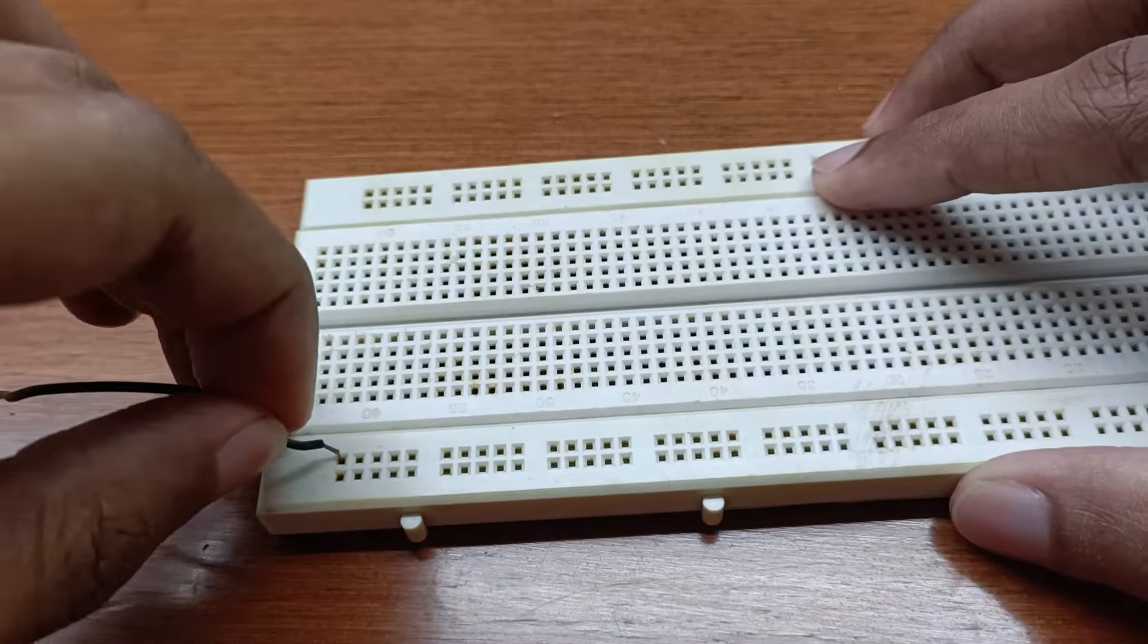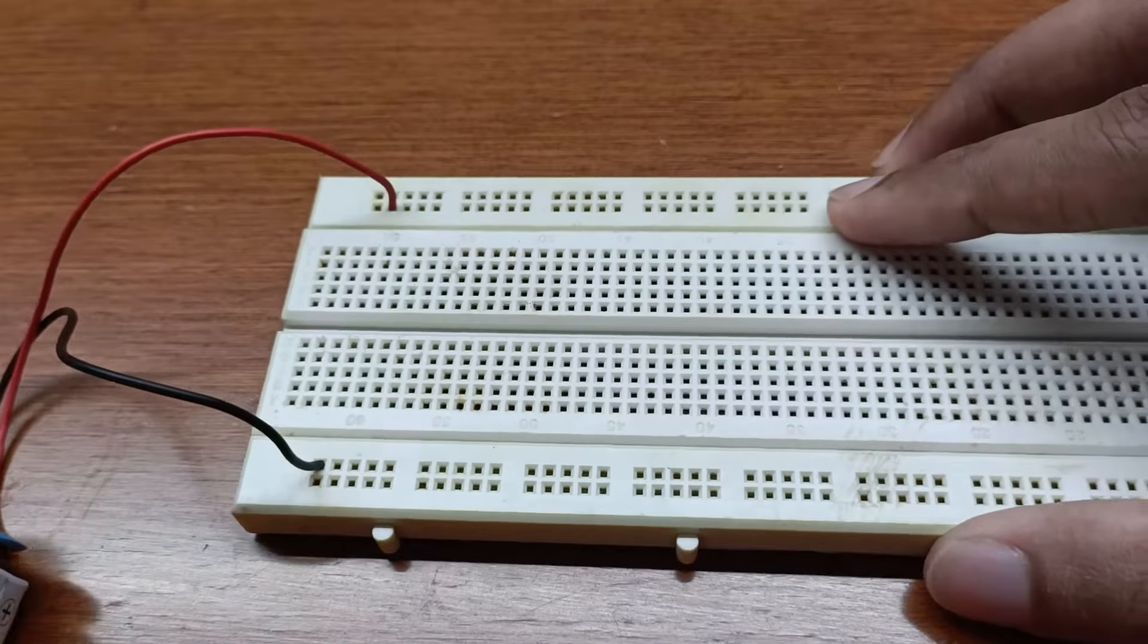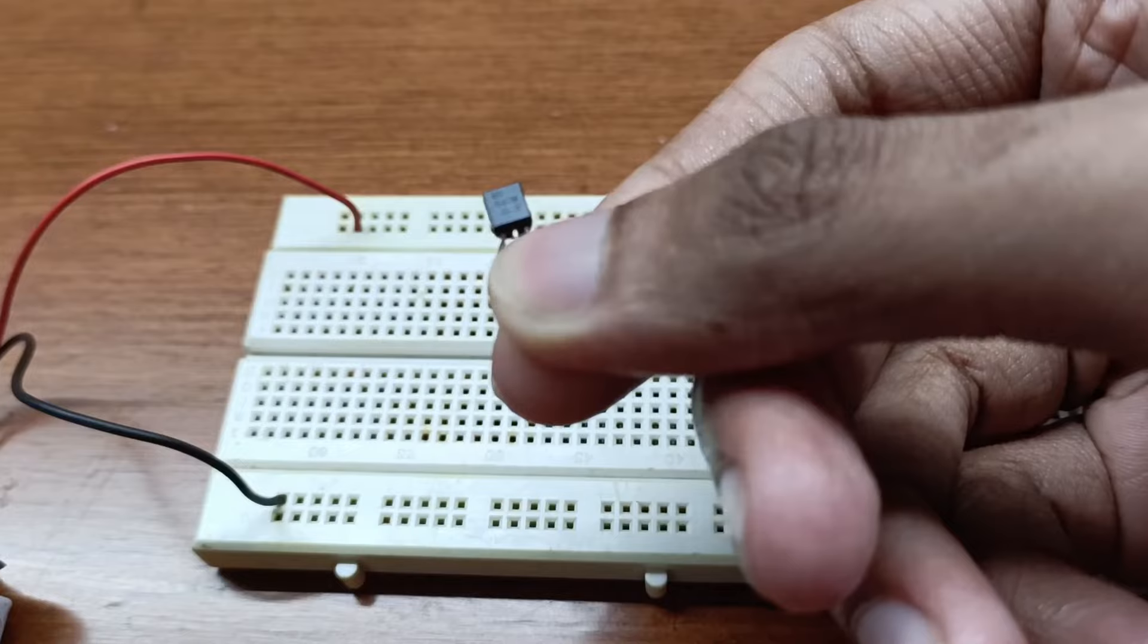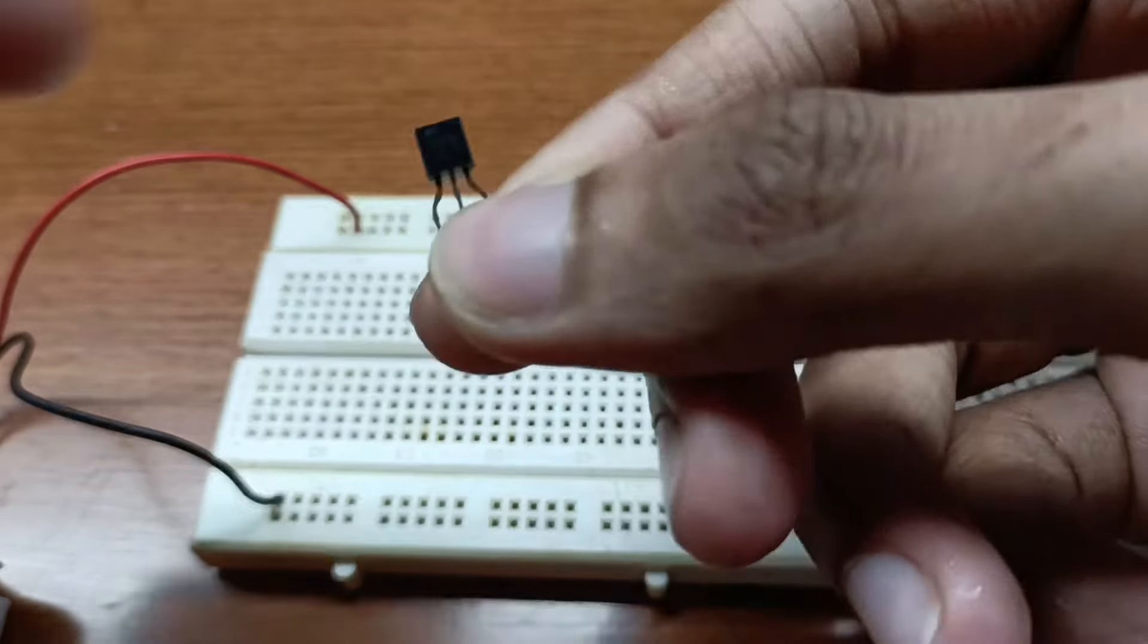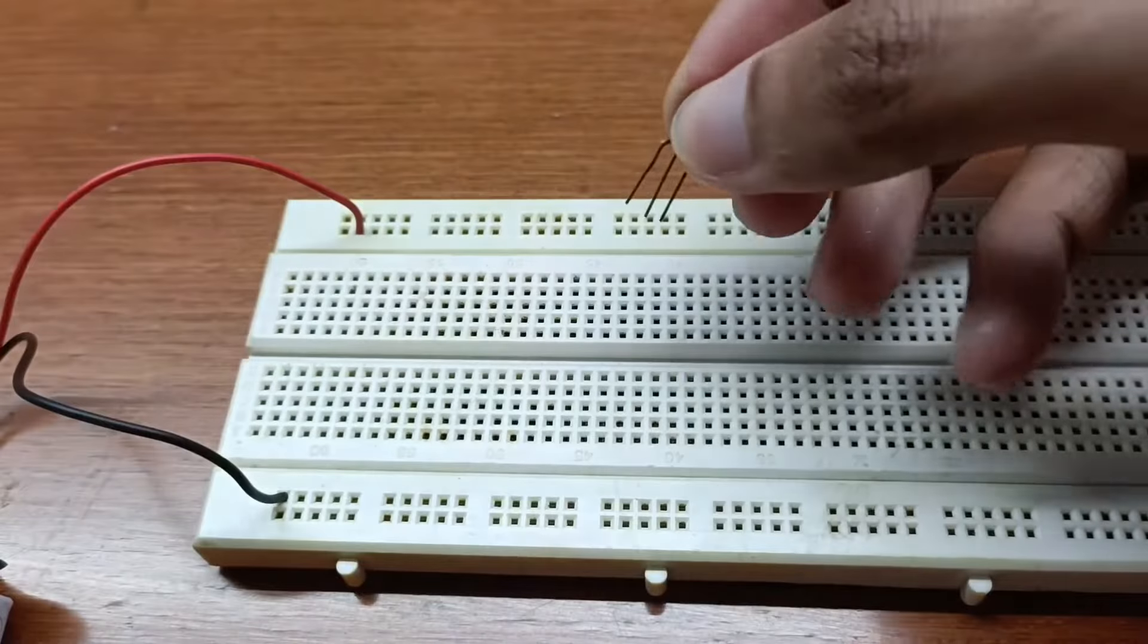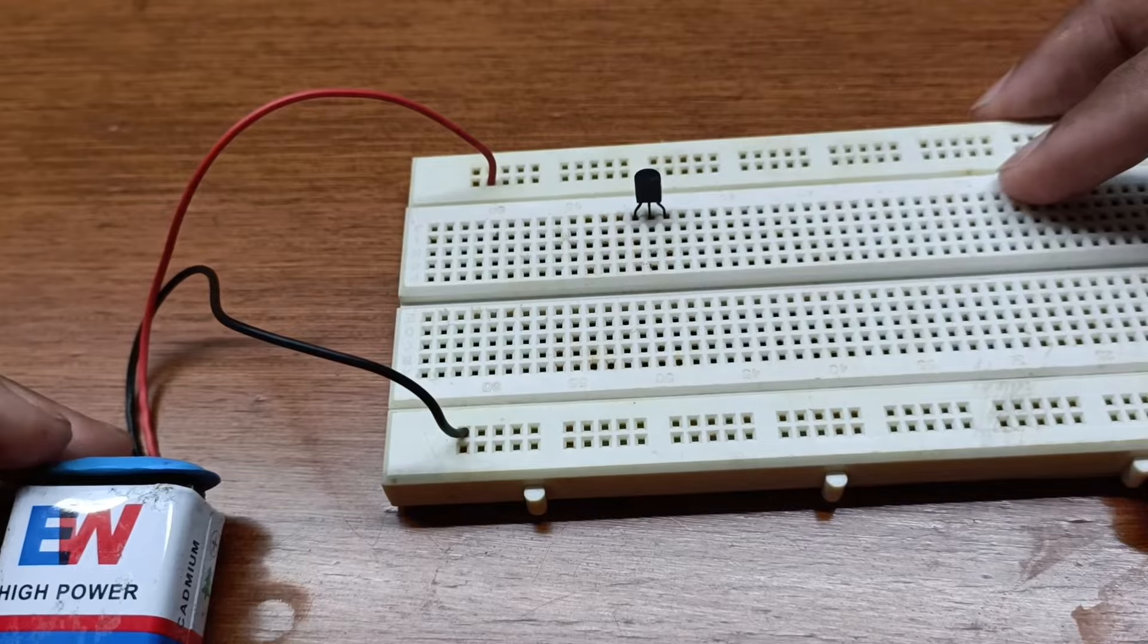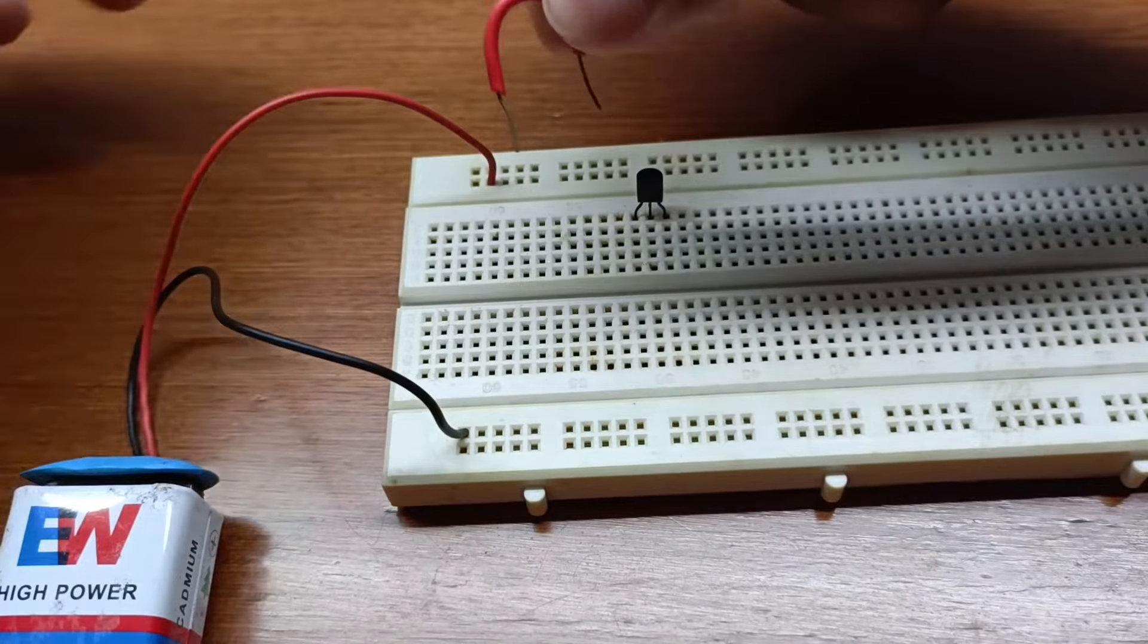Positive is anode and negative is cathode. The BC 507 transistor consists of three pins. When the flat side is facing you and we start from the left, it goes as collector, base, and emitter. So the first pin is the collector, the center or middle pin is called the base, and the third pin is called the emitter. It goes as CBE.